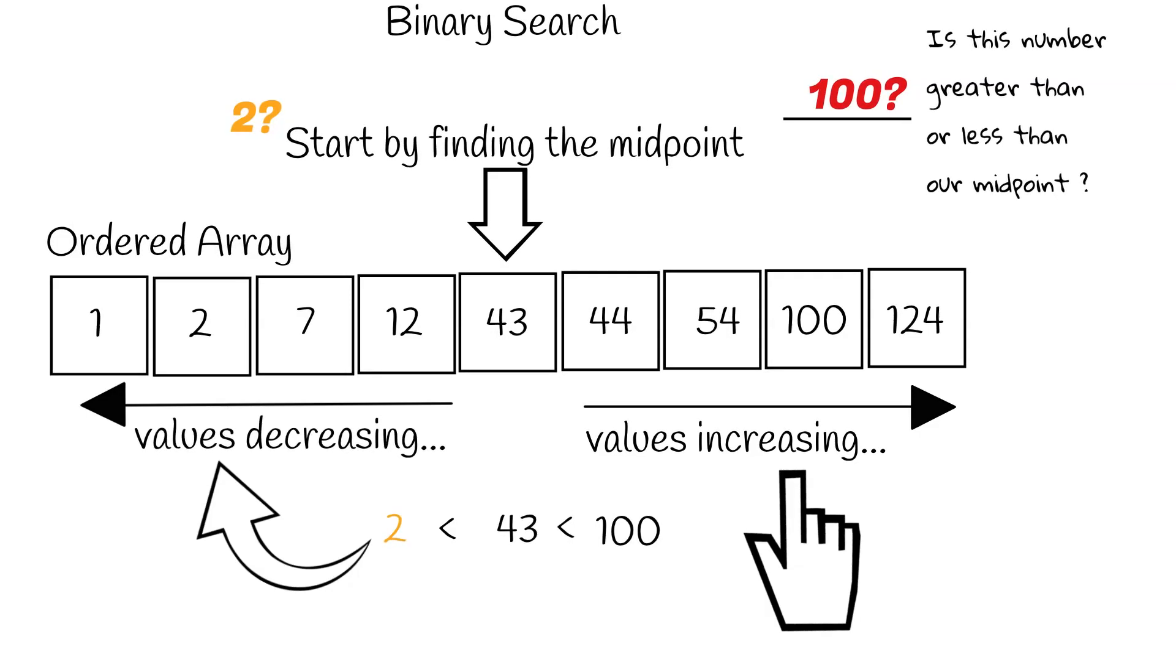And this ladies and gentlemen is why binary search will only work on ordered arrays. Because without the order, there would be no way to tell which side the number we're searching for is on by comparing it to the midpoint.